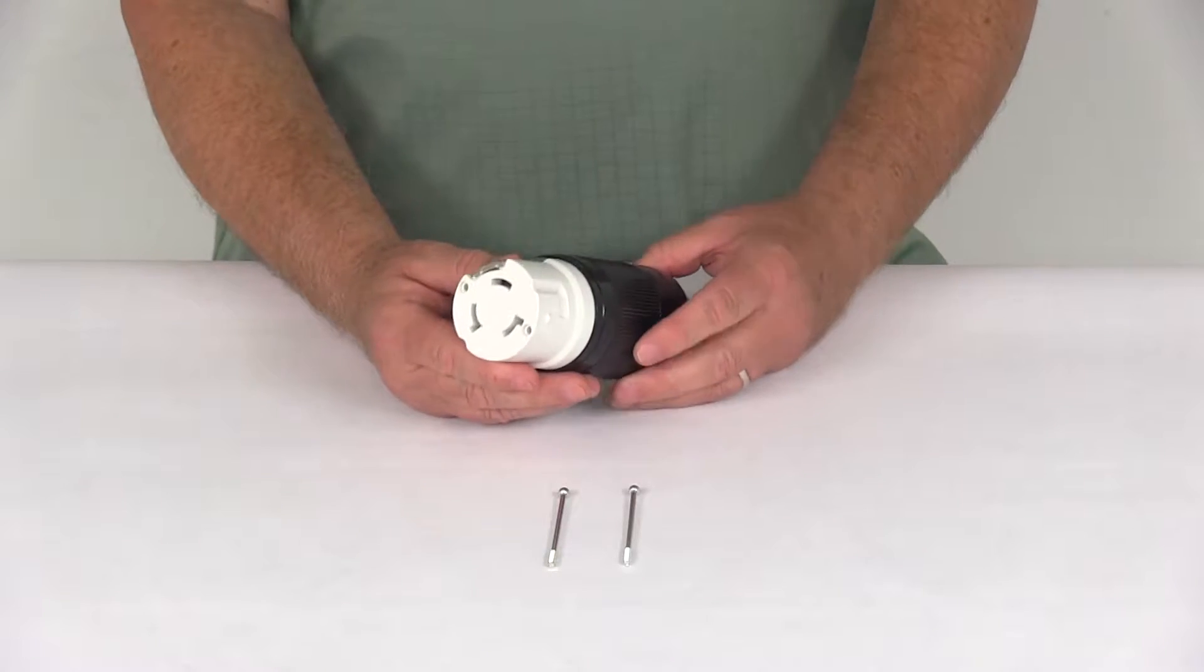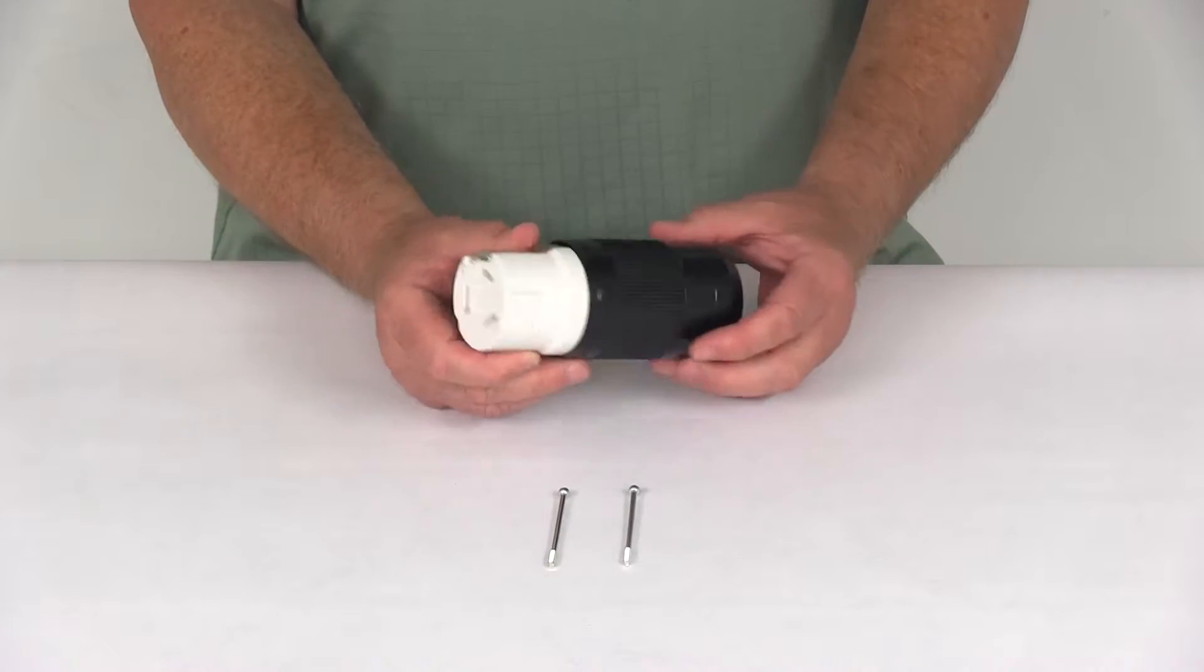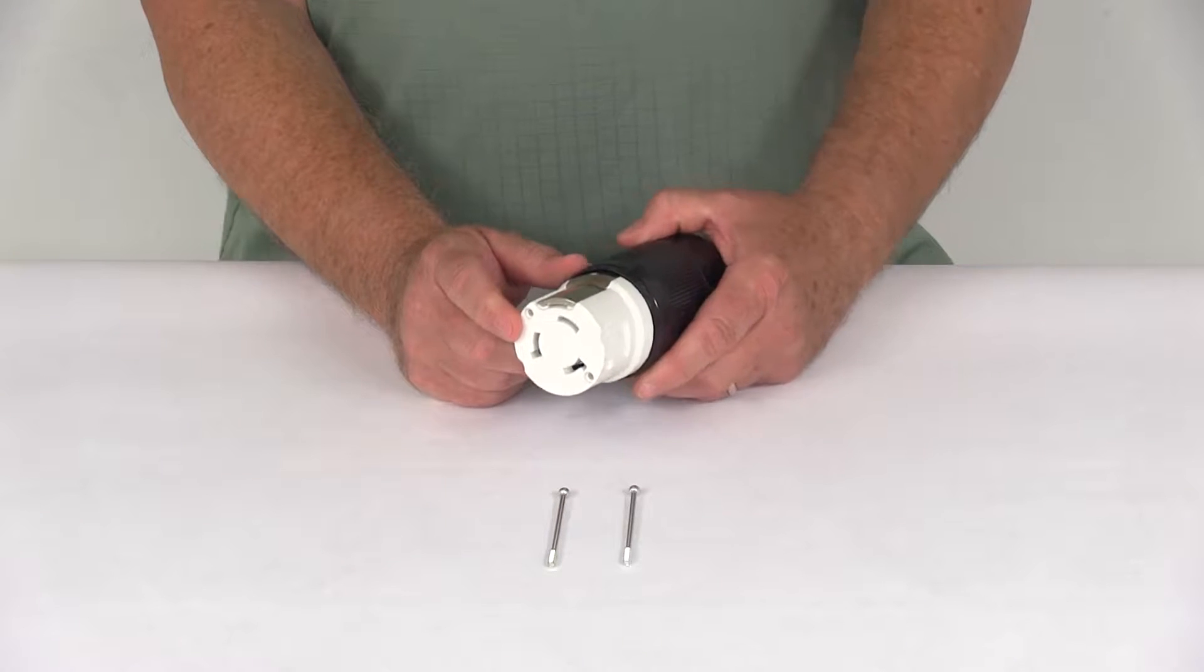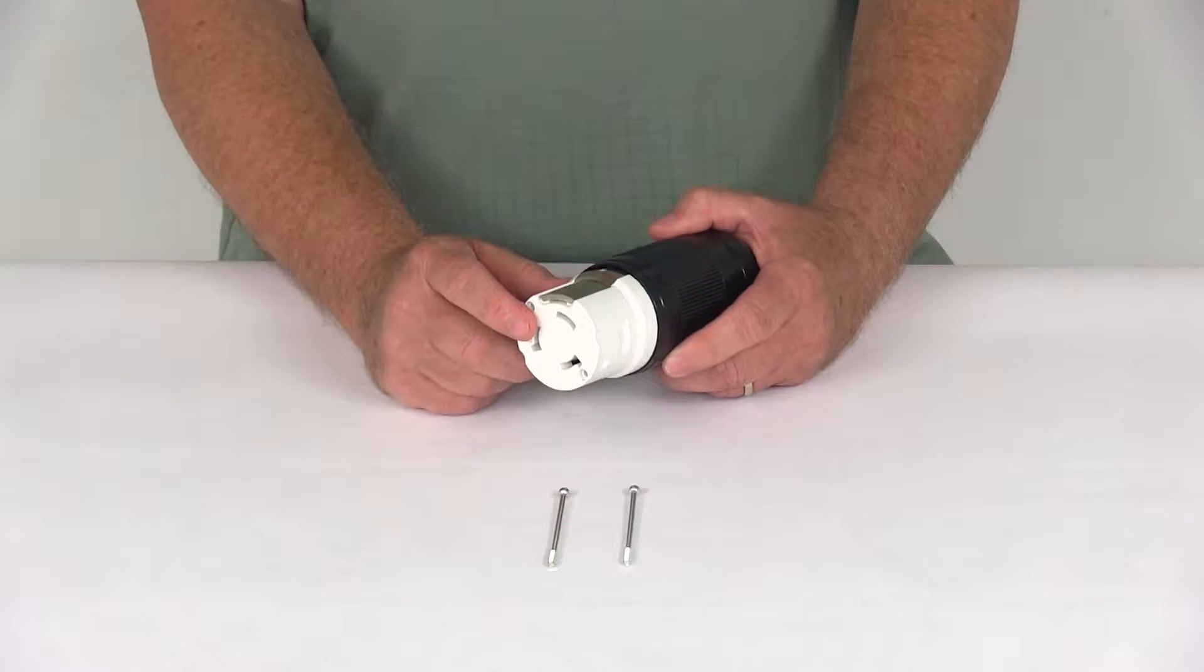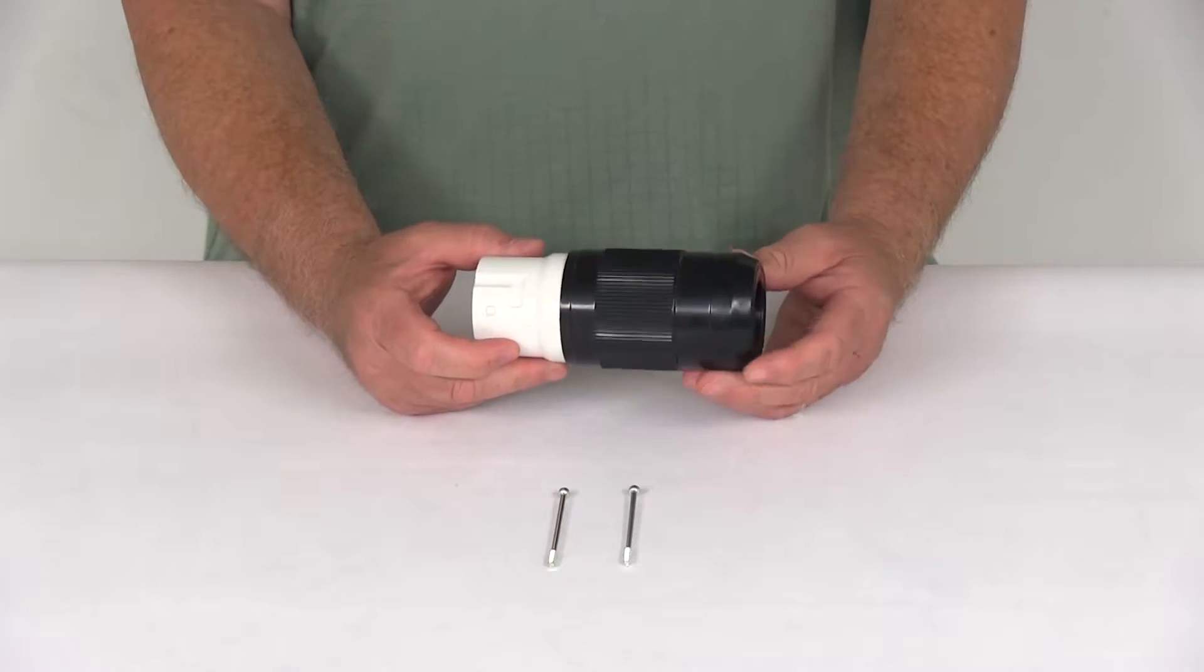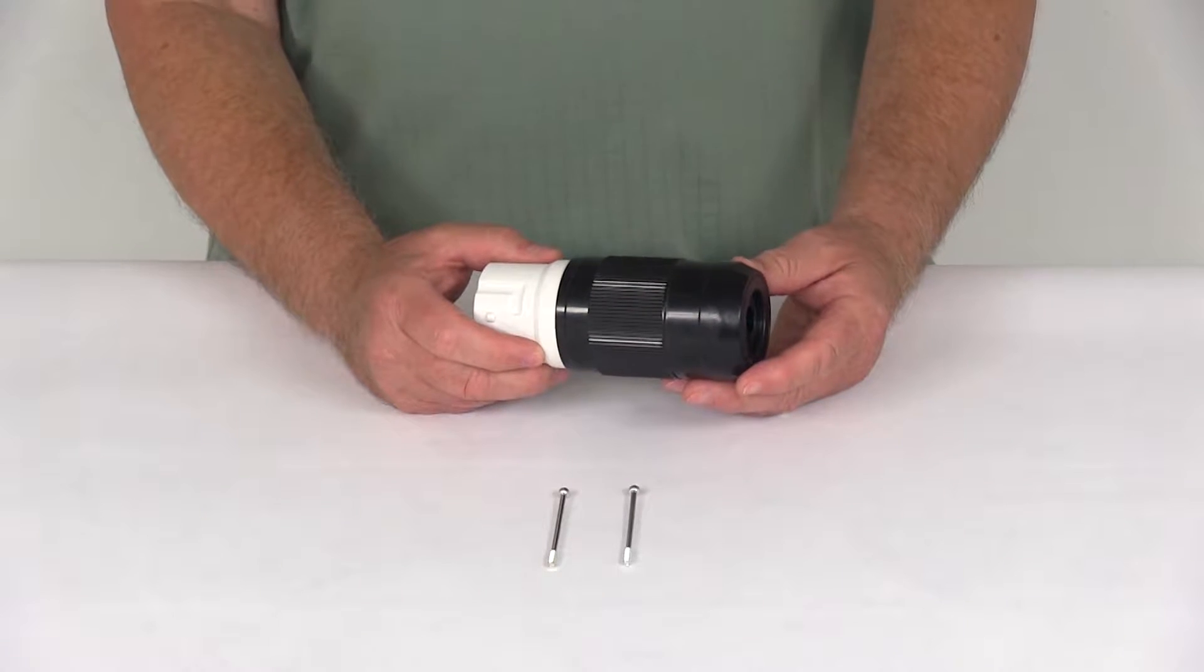Today we're going to take a look at the Mighty Cord 50 amp detachable female twist lock connector. This 50 amp waterproof replacement female twist lock connector is excellent for use in construction or repair of a 50 amp RV cord.